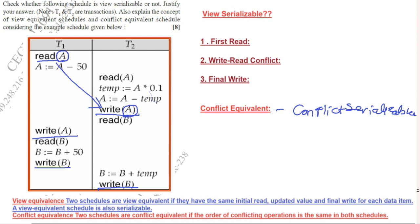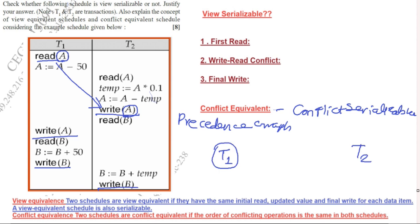We draw the precedence graph for this checking. In the precedence graph there will be two vertices, T1 and T2, because there are two transactions. We have found an arrow from T1 to T2 for the read A and write A conflict.